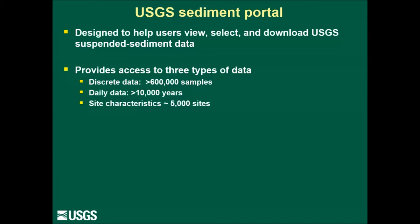These data include information on the site itself, such as site name, latitude/longitude, and information on streamflow characteristics, but also characteristics of the upstream drainage — such as total drainage area, average precipitation, soil characteristics, or land use.